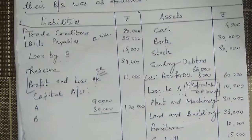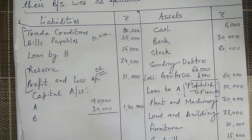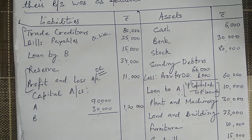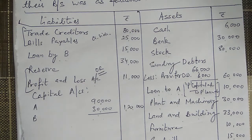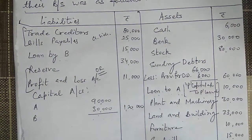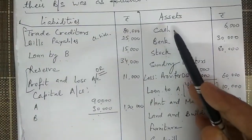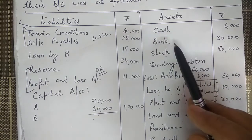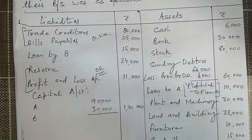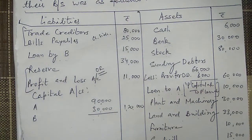For the adjustments — the additional information given after the balance sheet — each item has a double effect and must be shown twice. First, we will transfer each balance sheet item one by one. Cash and bank are immediately transferred to the bank account, so it is clear. Then we will open the ledger accounts and show each item.